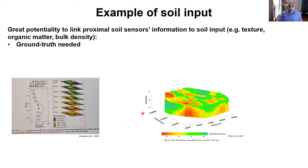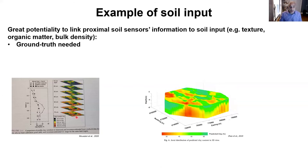Soil inputs are the hardest to obtain in the field because you need destructive sampling to characterize soil prior to the growing season. Proximal sensors offer great potential to link to soil inputs. For example, this shows spatial variability of clay content up to 70 centimeters at high resolution. The challenge is that you still need ground-truthing — maybe not 100 points, but a given number to link sensor information to your measurements.